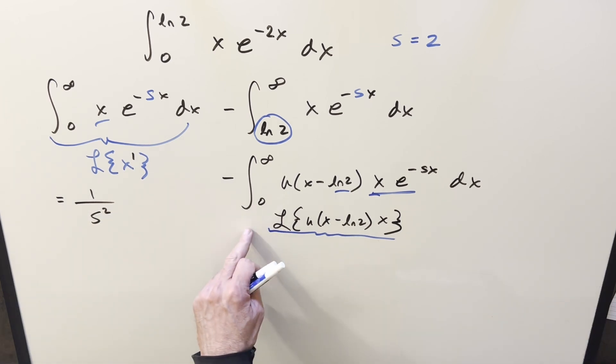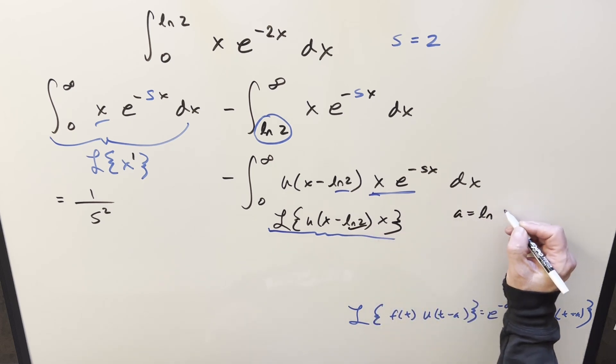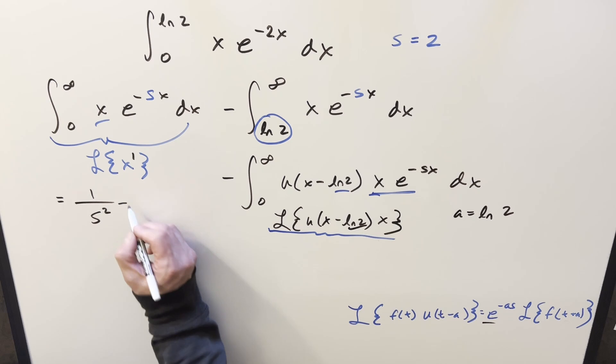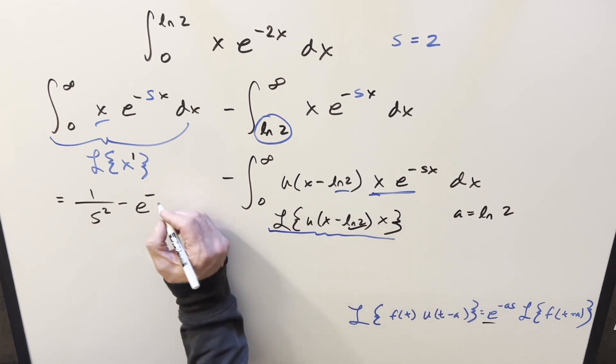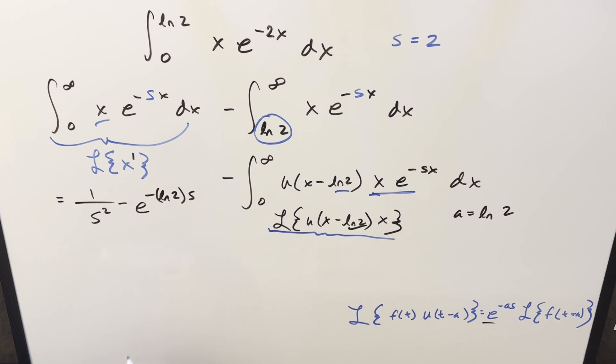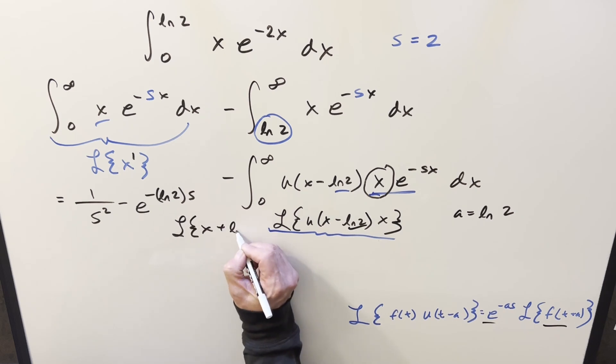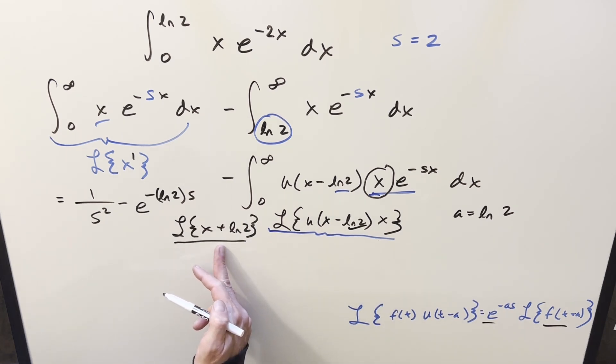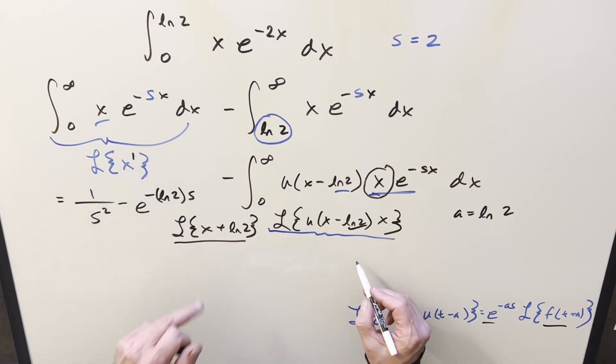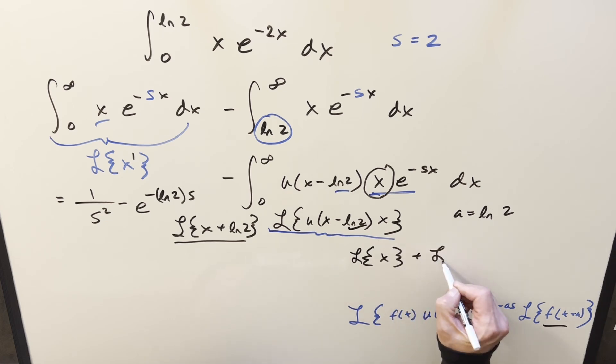And then for this Laplace transform right here, we've got a formula for this using the unit step function. So using this formula here, again, the a value in this, that's just going to be this right here. So the a value is going to be ln 2. So for this first part, let's plug it in here. We're going to have e minus a value, which is ln 2, times s. And then we want the Laplace transform of the shifted function, f of t, where our f of t, or our f of x, is just going to be this x. So we're going to want the Laplace transform of x plus ln 2. So for this value right here, because we're adding, and Laplace transform has that property of being a linear operator, we can actually split this up and write this as Laplace of x plus Laplace of ln 2.